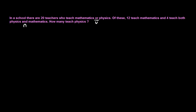Keep in mind: 'and' means they are talking about intersection, and if you get 'or' somewhere, it means it is union. The question asks how many teach physics, so I hope you understand the question.